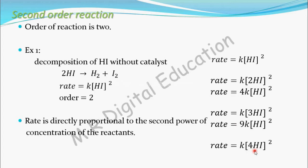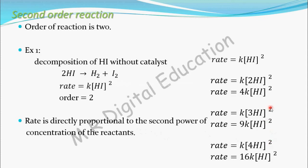Now I will increase the concentration of the reactant HI 4 times. Let's see how much the rate will increase. 4 squared: take the 4 outside, so 4² = 16, and the rate increases 16 times — that is, 4² times. So in a second order reaction, the rate increases in the second power of the concentration of the reactants.